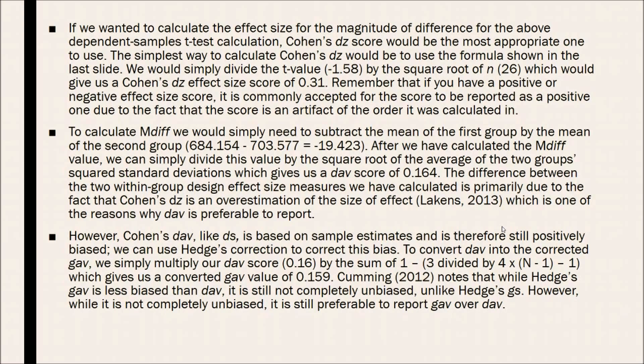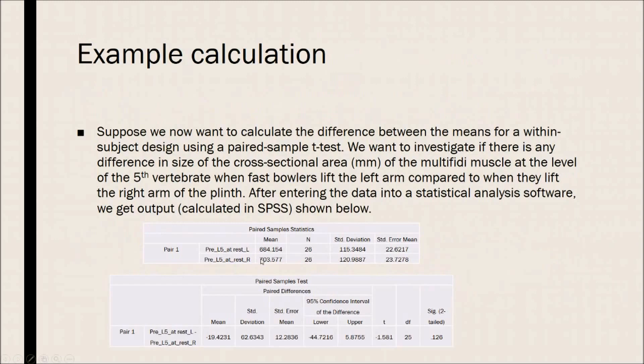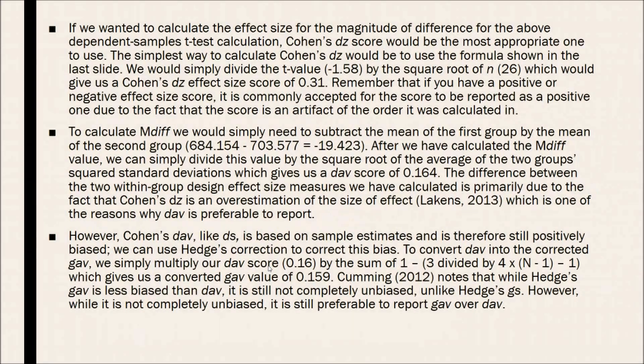So if you have a smaller number being subtracted from a large number, your score will obviously be negative. To calculate MDif, the mean difference, we would simply need to subtract the mean of the first group by the mean of the second group. So 684 minus 703, which would give us a negative 19.423. After we have calculated the MDif value, we can simply divide this value by the square root of the average of the two groups squared deviations, which gives us a DAV score of 0.164. The difference between the two within group design effect size measures we have calculated is primarily due to the fact that Cohen's DZ is an overestimation of the size of the effect, which is why DAV is preferable to report.